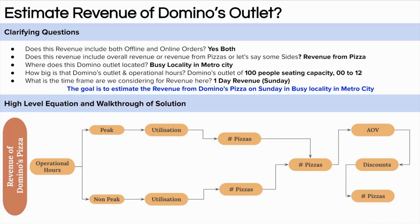With 12 hours of operation, let's assume six hours of peak and six hours of non-peak. I've taken a 50-50 split because there is both offline and online delivery, so there may be peak hours from online orders we haven't even accounted for. In peak hours, let's assume 100% utilization of the oven, and in non-peak hours, 50% utilization of the oven.